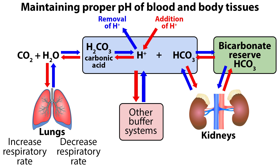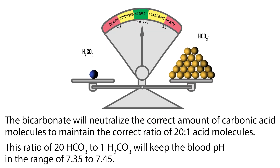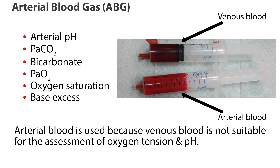If both the lungs and kidneys are working properly, the natural buildup of acids will be neutralized effectively by the buffer system. The buffer system works very quickly to maintain proper pH of the blood and body tissues. The bicarbonate will neutralize the correct amount of carbonic acid molecules to maintain the correct ratio of 20 to 1 — that is, 20 bicarbonate (HCO3) to 1 carbonic acid (H2CO3) — which will keep the blood pH in the range of 7.35 to 7.45.